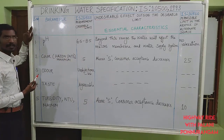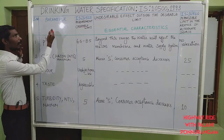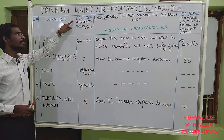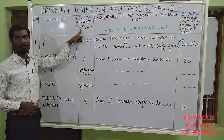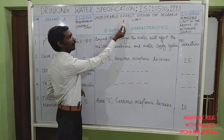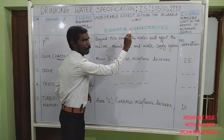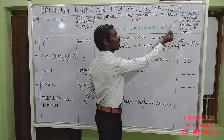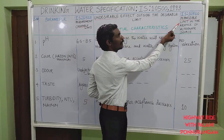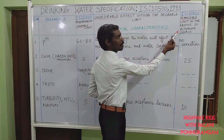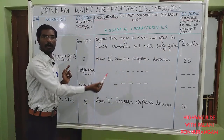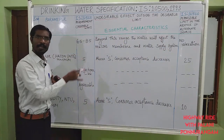The table columns are: serial number, parameter, the desirable limit as per Indian Standard requirement, the undesirable effect outside the desirable limit, and the permissible limit in the absence of an alternate source as per IS 10500. This is the table we are going to follow for all the standards.